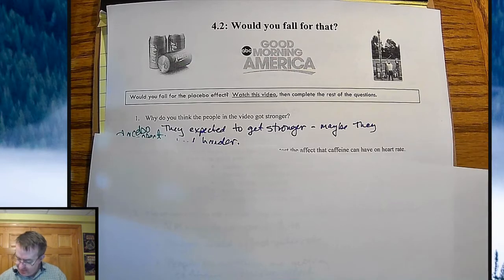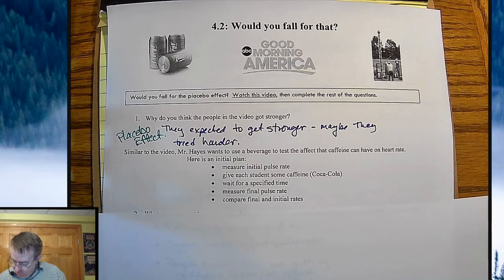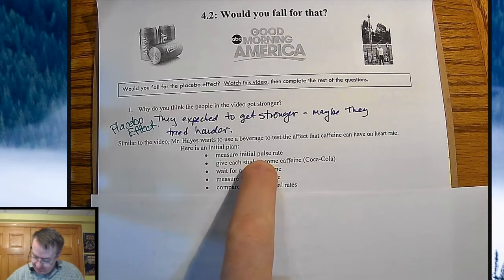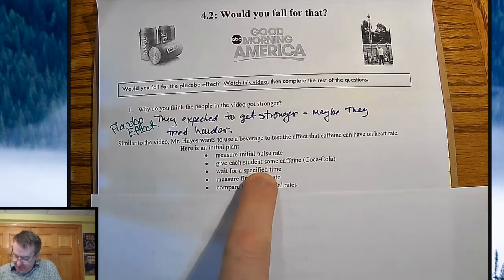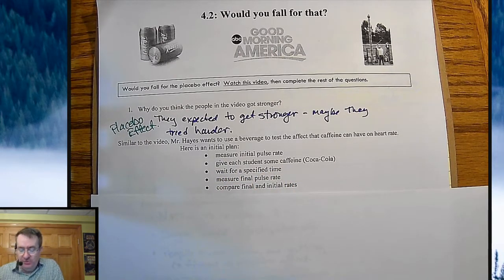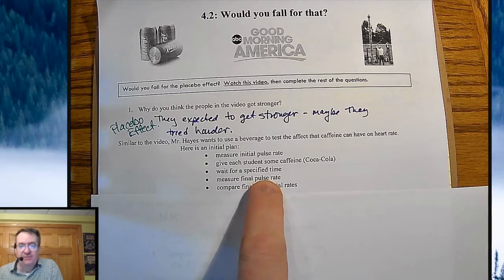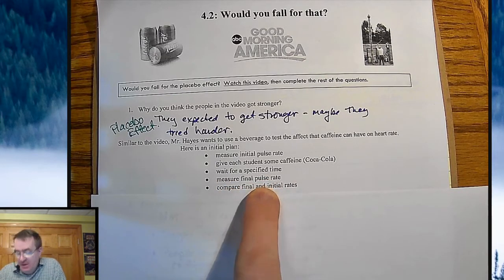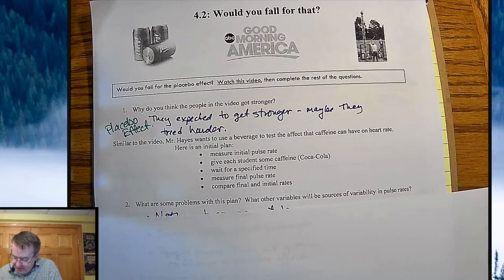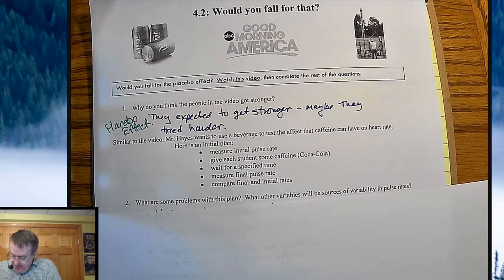So here's what ends up happening. I want to do a similar experiment, except I really want to give students caffeine to see if anything happens. The plan is: measure the initial pulse, give students caffeine in the form of Coca-Cola, wait for a specified time, measure the final pulse rate, and compare the final pulse rate to the initial pulse rate. So what are some things that could be wrong with that plan? What other variables could be sources of the increased heart rate?